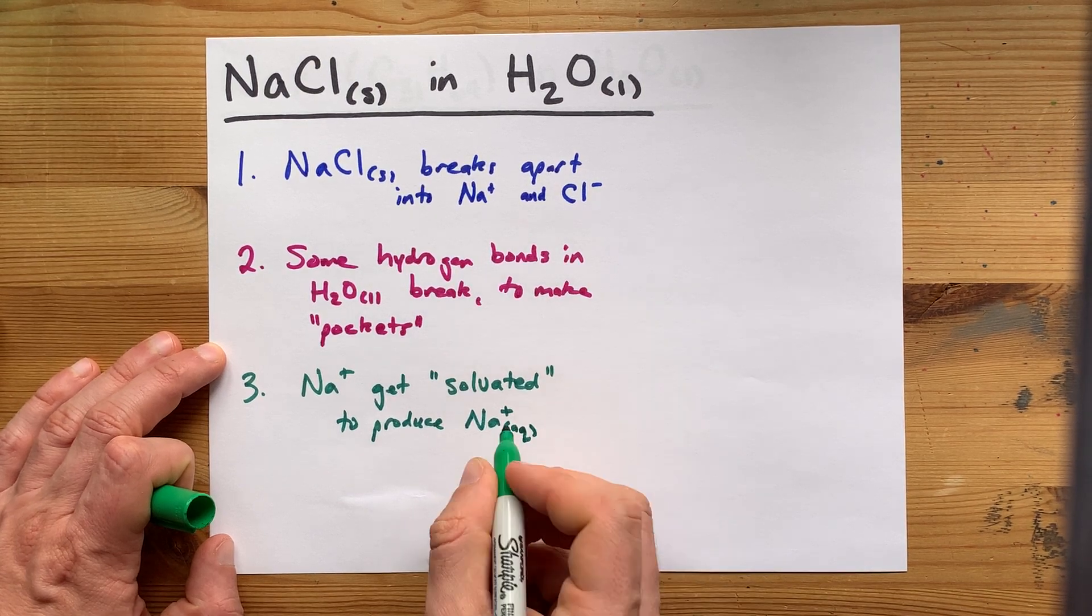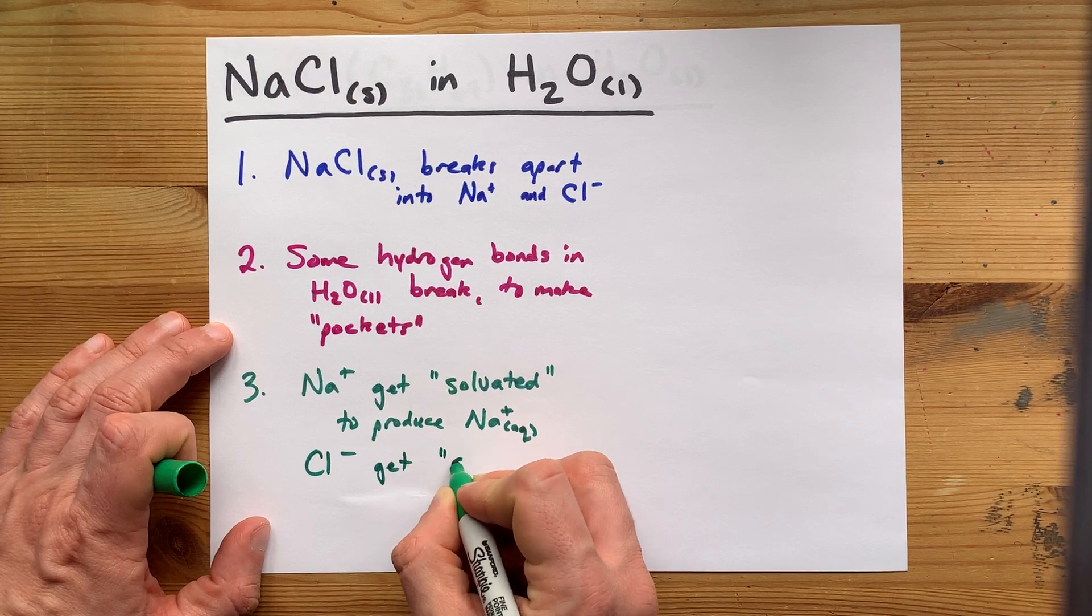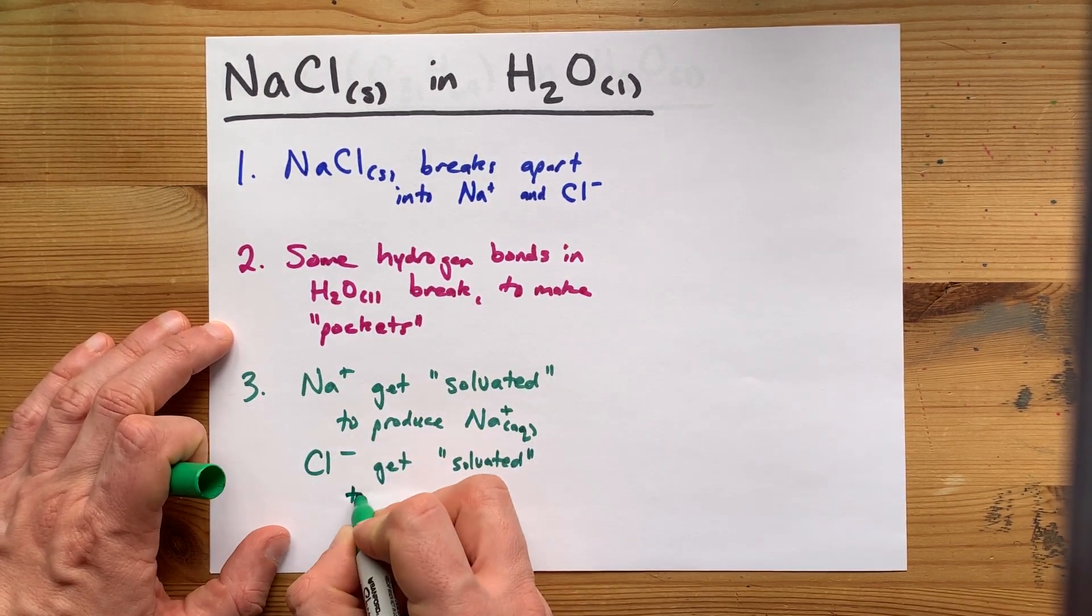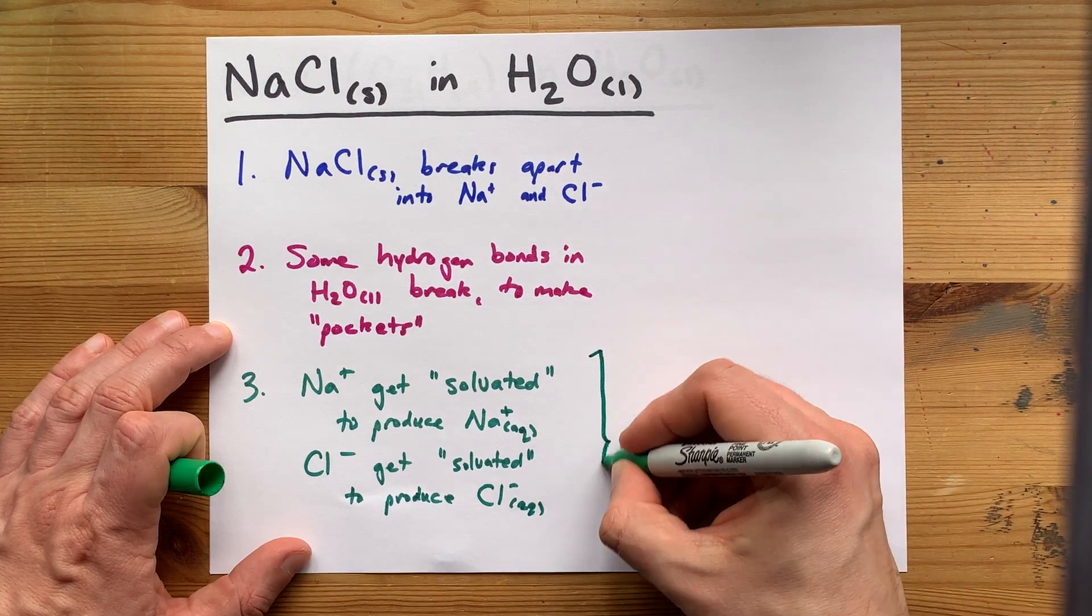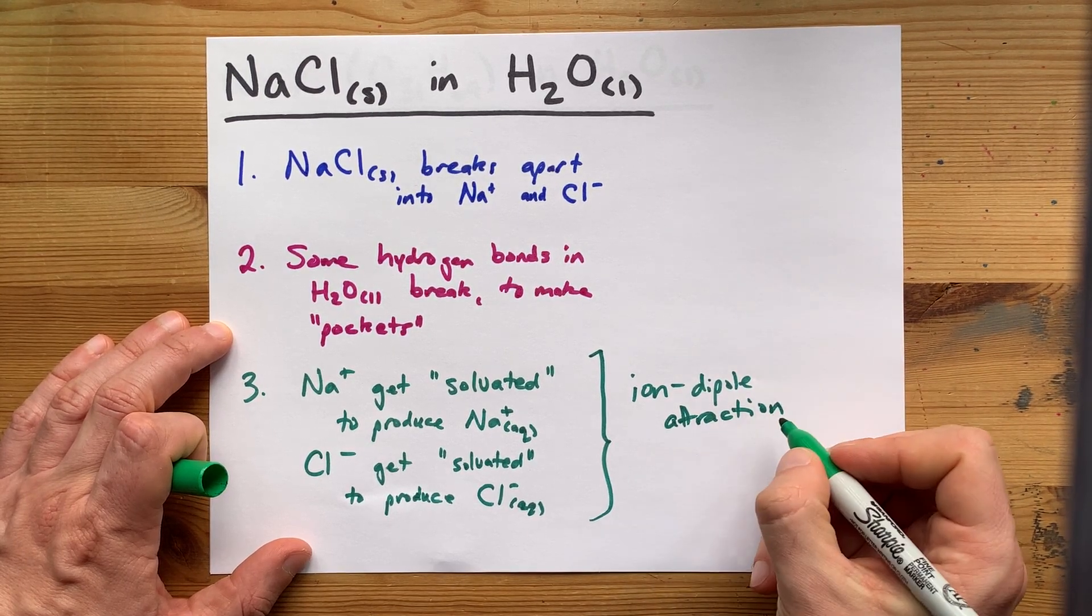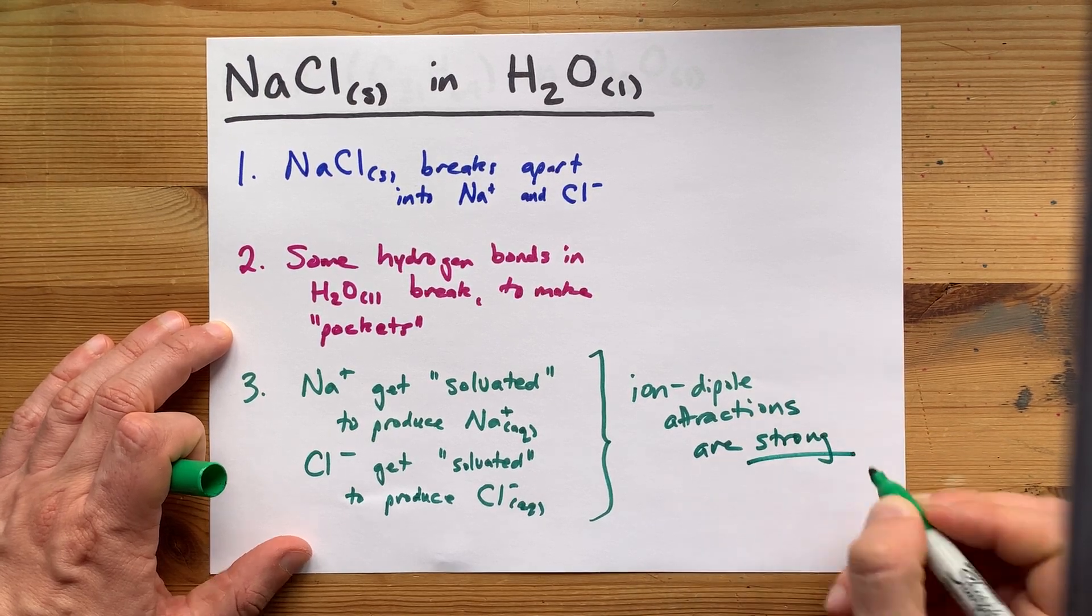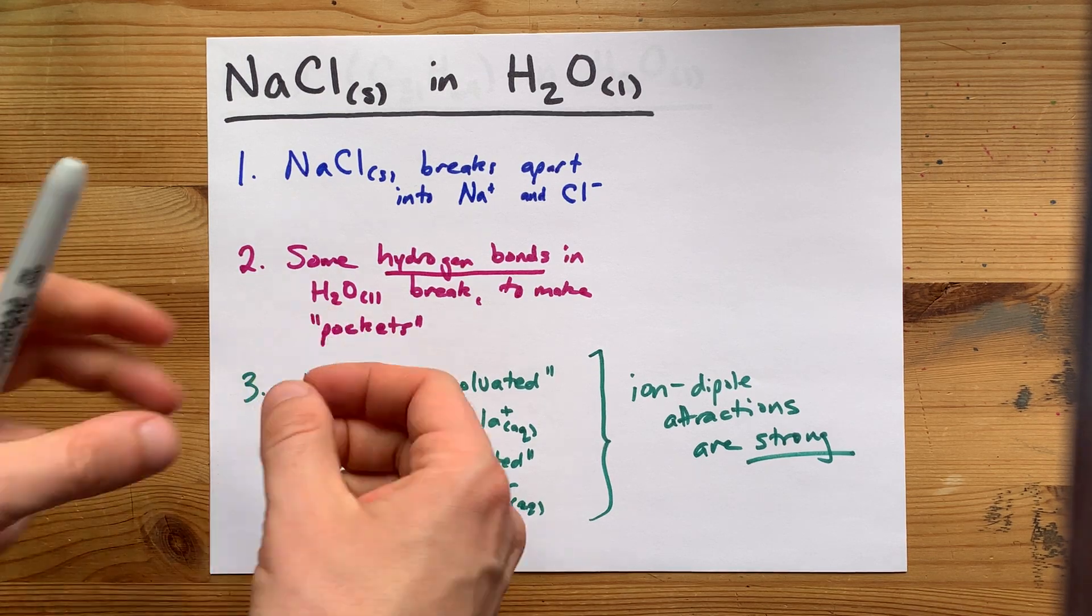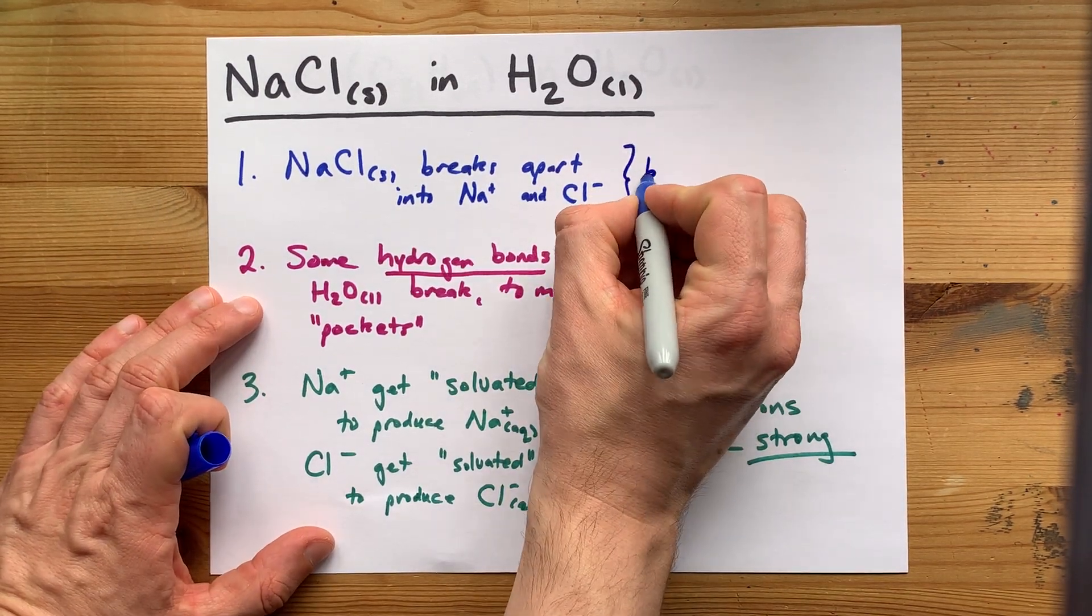Now, you're probably not responsible for how many waters that takes, but it takes about six waters to surround it fully. And in addition, Cl- ions get solvated. The water solvent molecules surround it as well. I think it's also about six. And that finally lets you write the (aq) on it as well. Now, these ion-dipole attractions are so strong that it makes the entire process spontaneous. Now, just to be clear, this was us breaking hydrogen bonds, which are an intermolecular force. You're not breaking the waters into hydrogens and oxygens. You're just separating two H2Os away from each other. And here, in theory, you're breaking ionic bonds.